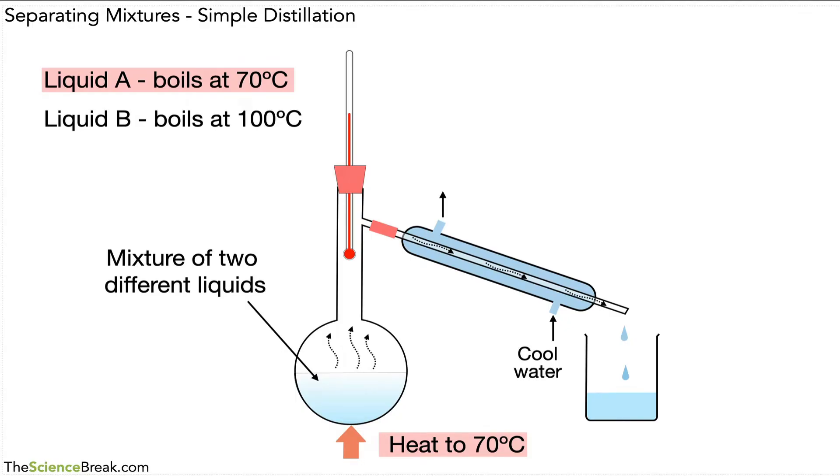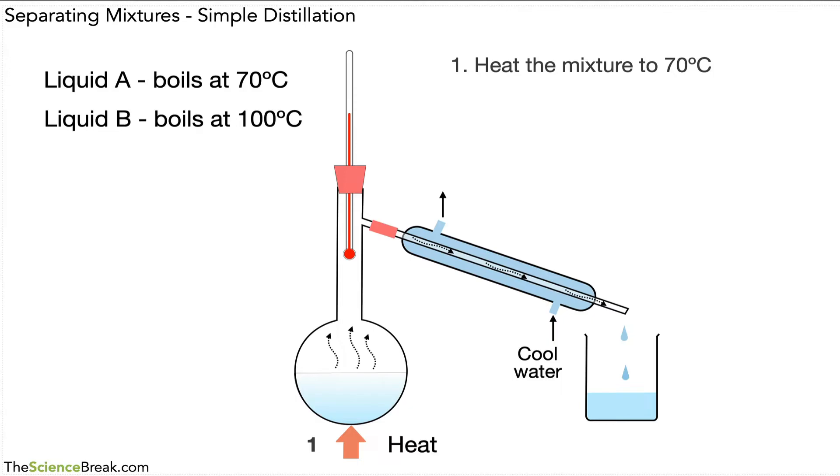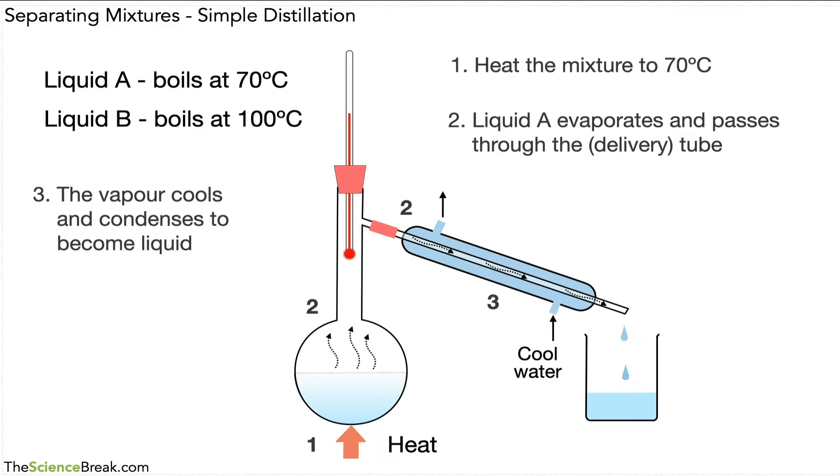We can make a note of how this process works. Point number one: heat the mixture to 70 degrees centigrade using a thermometer to make sure it's at 70. Liquid A evaporates and passes through the delivery tube. The vapor cools and condenses to become liquid because of the cooling water jacket.